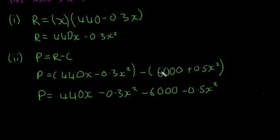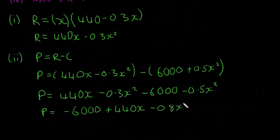So don't forget that second minus there. If it's minus and then a bracket, you have to do minus 6,000 and minus 0.5x squared. So then our P is going to be given by minus 6,000 plus 440x minus 0.8x squared. So I just wrote the 440x in the middle here, so it looks like a quadratic. Let's put a little box around that.